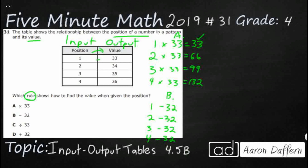If we were to go backwards — say 33 minus 32 — that would equal 1, and 34 minus 32 would equal 2, and so forth. This would work going right to left. But we don't go right to left; we go left to right. So we have to go 1 minus 32, and that just gets us negative 31. Think of being at 1 on a thermometer and going down 32 — that gets us negative 31, negative 30, negative 29, negative 28. Our negatives get closer and closer to zero as our inputs get bigger, so B does not work.